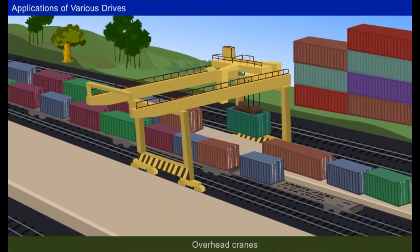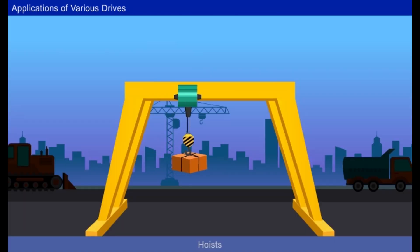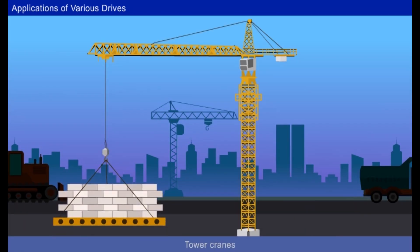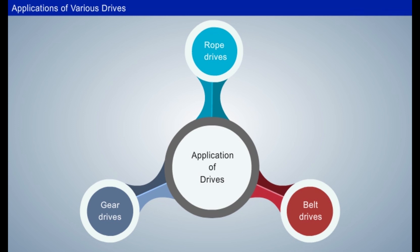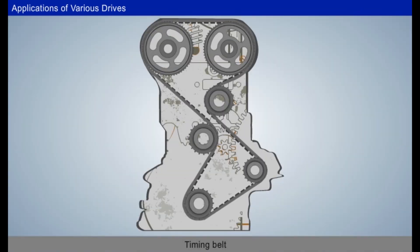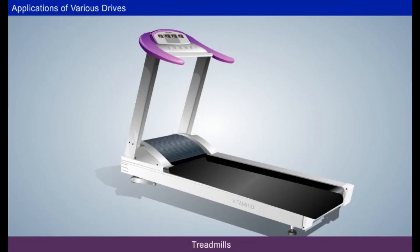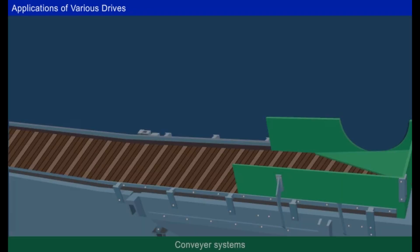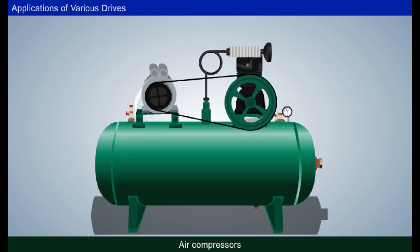Overhead cranes, hoists, and tower cranes. Applications of belt drives: Timing belt or cam belt systems are used in IC engines. Flat belts are used in treadmills, in conveyor systems, and V-belts are also used in air compressors.